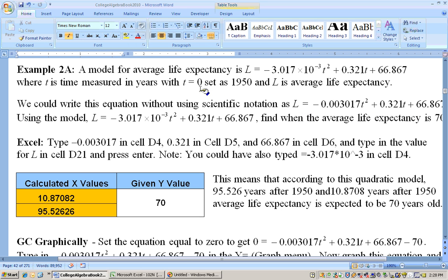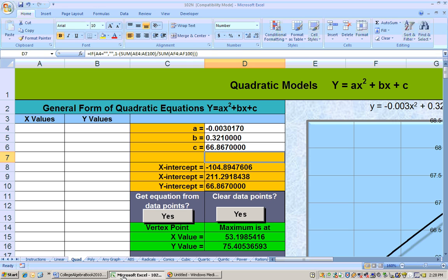So now we've got the equation in a nicer format here. L is average life expectancy, and T equals 0. Well, T is the year you were born, and T equals 0 is the year 1950. So what do we need to do with this? Well, anything it wants us to do with this quadratic equation, we can do on the quadratic Excel sheet. So let's go to the quad sheet.